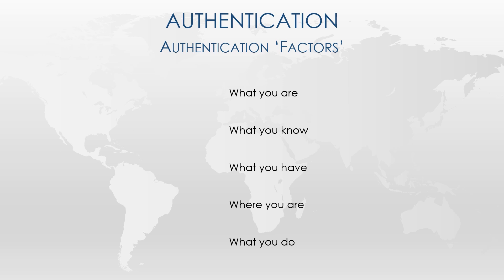There are three primary methods called factors to prove who you are. These are known as what you are, what you know, and what you have.